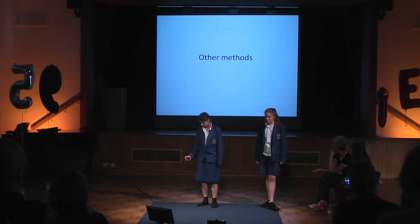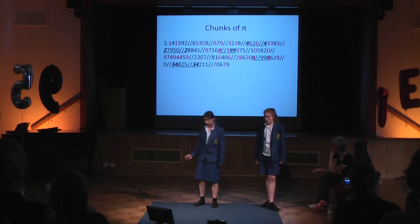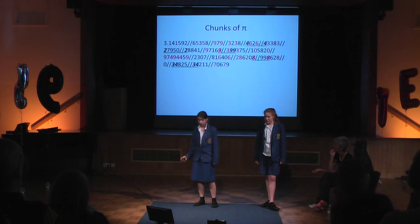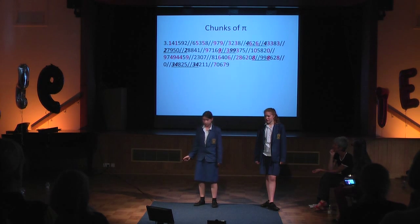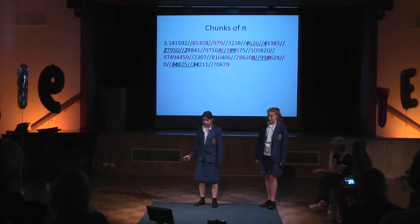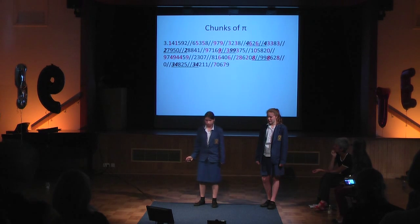These are the chunks used for the first 100 digits of pi. The red numbers are the patterns inside the chunks, and the underlined parts are the links between chunks.